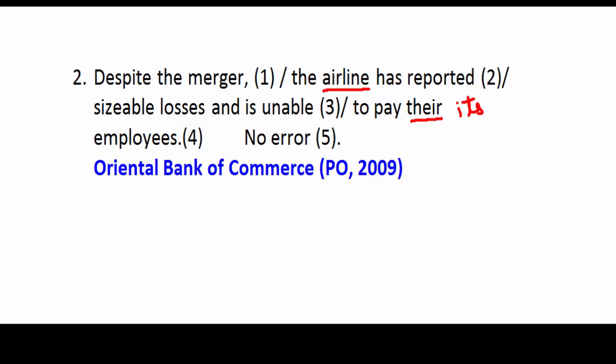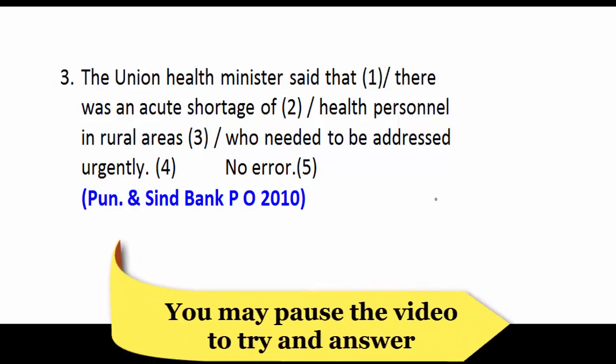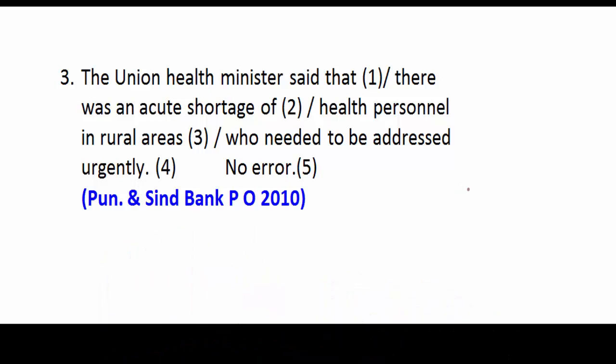It will not be 'his' because airline is a non-living thing. What we see here is that the distance between the antecedent and the pronoun is increased, and because of this it sometimes becomes difficult to relate the pronoun to its antecedent. But we have to be careful, and with practice we will get better.